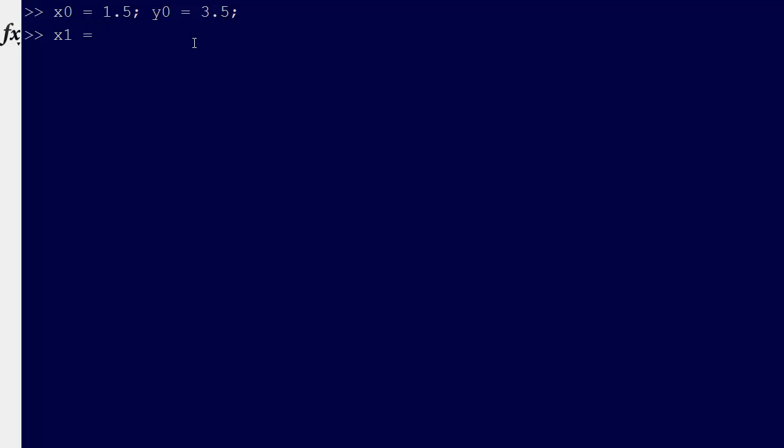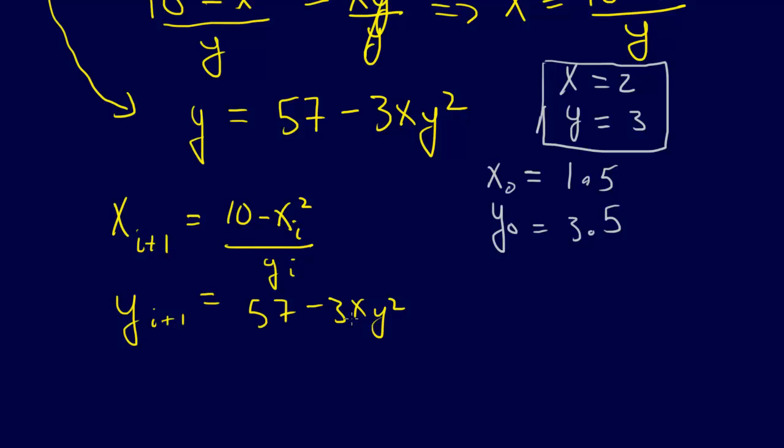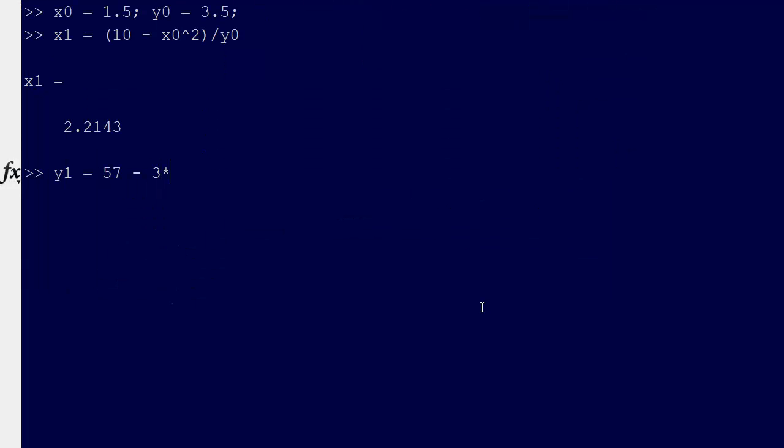So now we can just say x1 equals 10 minus x naught squared divided by y naught. So that's x1. So we get 2.2. And then Y1 equals 57 minus 3 times x1 y naught squared. I just used the x1 here because we've already got it. So why don't I use the latest value? So using x1 here and then y naught, minus 24. So it looks like it's not getting us there.